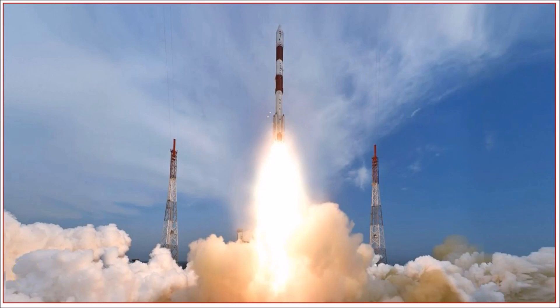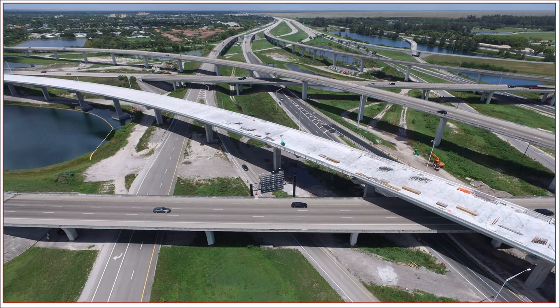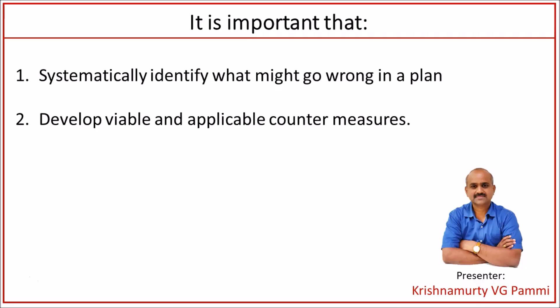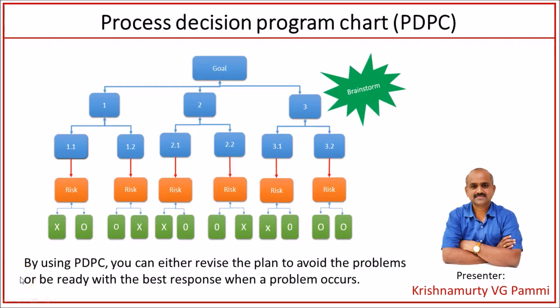How to identify potential problems in a project or a plan and how to develop countermeasures that are viable and effective to address these problems on a project using a technique called Process Decision Program Chart, or PDPC. When we manage mission critical projects like rocket launches or space stations, or when we manage large and complex projects, the price of a simple failure is quite high.